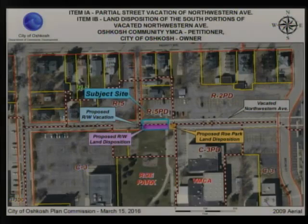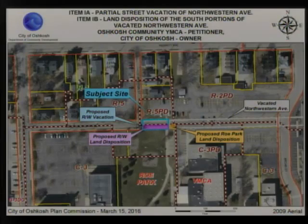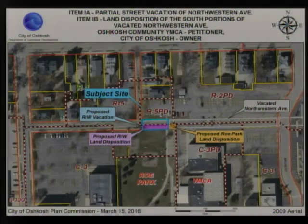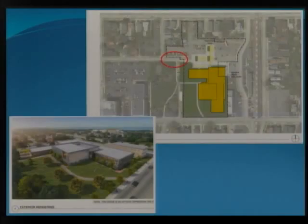There are instances where that doesn't happen. So in this case, when this portion of Northwestern is vacated — if it is vacated — the north half would go to the YMCA property, who owns this parking lot, and the south half would go to Roe Park. City staff, when we reviewed the request to vacate the right-of-way, didn't feel there's any need to keep the southern half. There are utilities in there, but we would retain easements over the top of it. Parks Department wasn't interested in it. City felt that we didn't need it. So the request is also to dispose of this purple area — the newly vacated right-of-way — from the city to the YMCA.